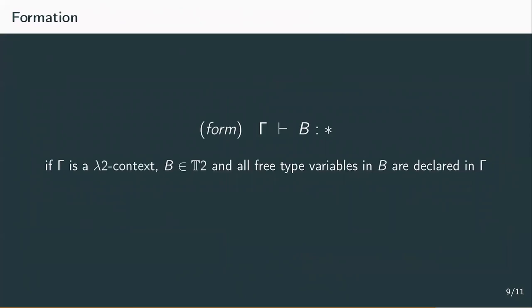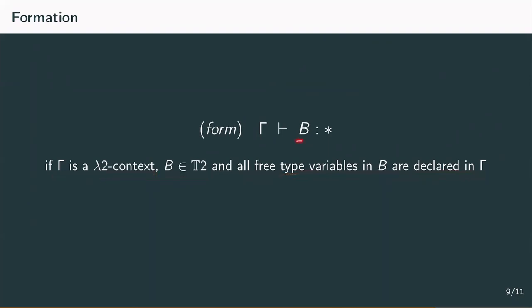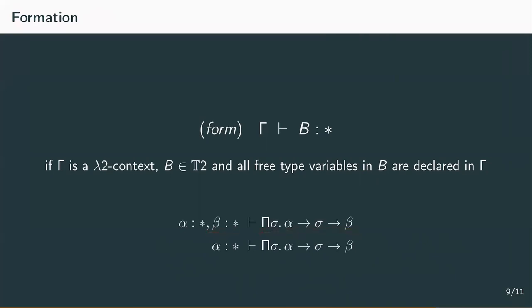The formation rule is pretty straightforward. Whenever gamma is a proper lambda 2 context, B is a type and all of its free type variables are declared in gamma, we can derive that B is a type under context gamma. So a type is only properly defined if all of its parts are properly introduced. For example, the judgement 'alpha is a type, beta is a type yields pi sigma dot alpha to sigma to beta' is proper, while 'alpha is a type yields pi sigma dot alpha to sigma to beta' is not.